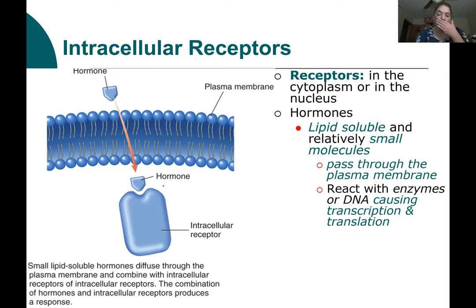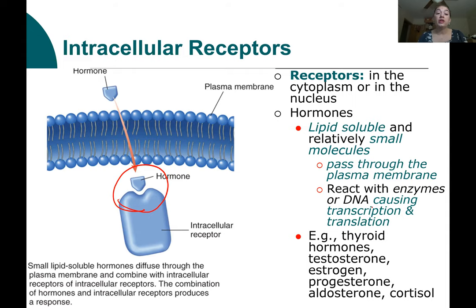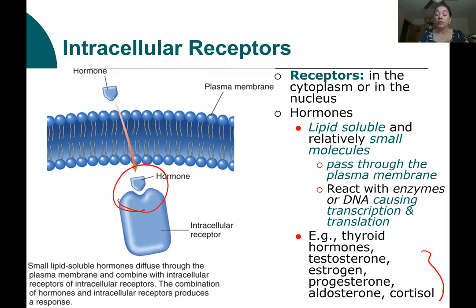They pass through the plasma membrane and bind to a receptor inside the cell or inside the nucleus, causing changes to occur. They will react with enzymes, or they can cause transcription or translation to occur. Examples of hormones that bind to intracellular receptors include thyroid hormones, testosterone, estrogen, progesterone, aldosterone, and cortisol. The majority of these are lipids — many are variations of the cholesterol molecule.